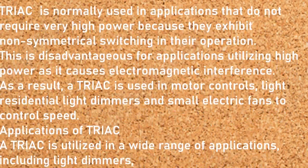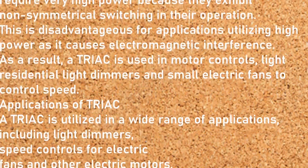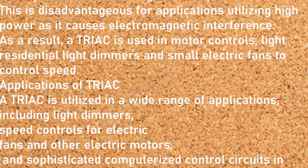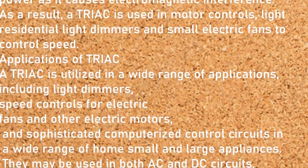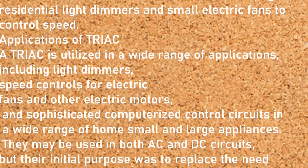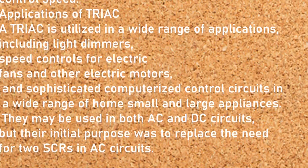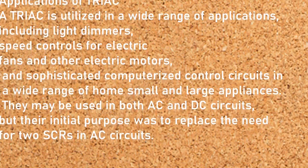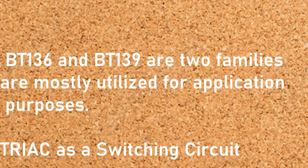Applications of TRIAC. A TRIAC is utilized in a wide range of applications, including light dimmers, speed controls for electric fans and other electric motors, and sophisticated computerized control circuits in a wide range of homes, small and large appliances. They may be used in both AC and DC circuits, but their initial purpose was to replace the need for two SCRs in AC circuits. BT-136 and BT-139 are two families of TRIACs that are mostly utilized for application purposes.